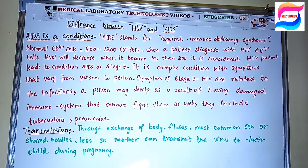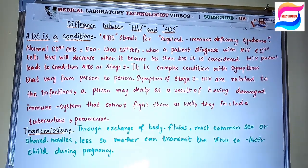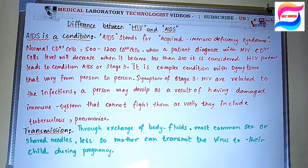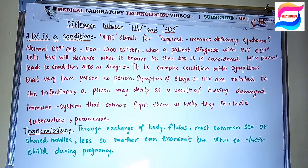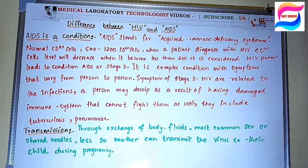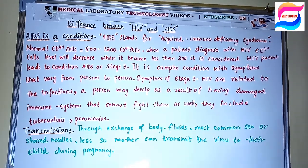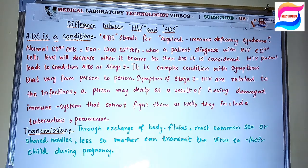HIV is transmitted through the exchange of body fluids. Without proper screening, if you receive blood or any body fluid from a person, there is a chance of HIV transmission — viral screening is essential before any exchange of body fluids. More common causes are unprotected sex and shared needles, such as needles shared during drug use. A less common cause is mother-to-child transmission during pregnancy.